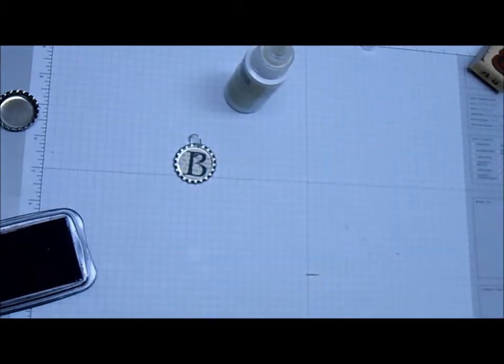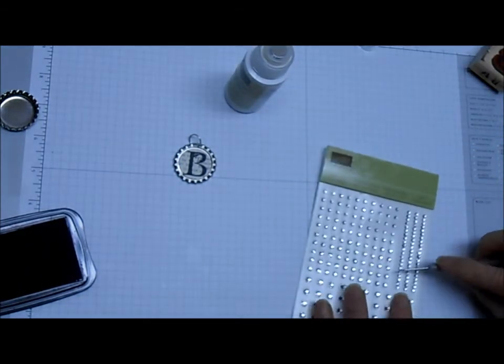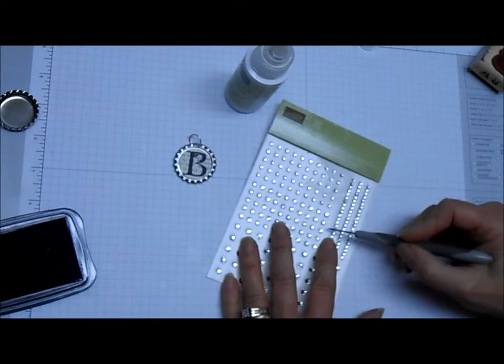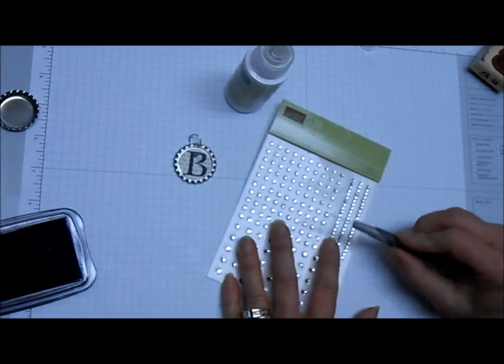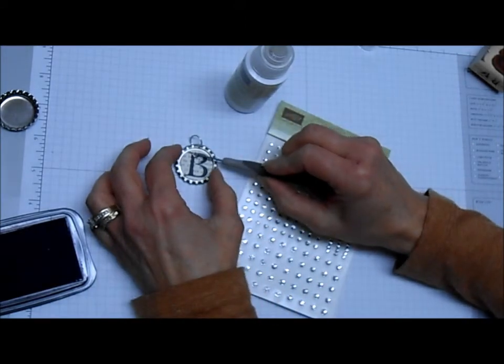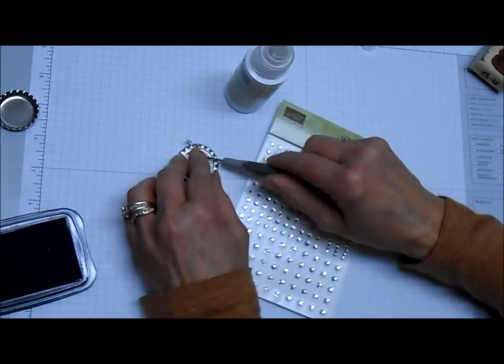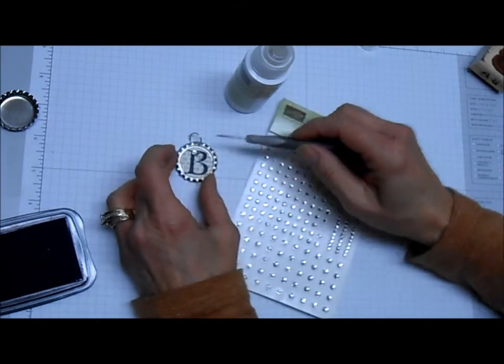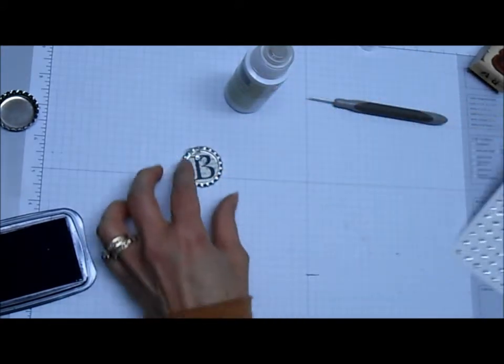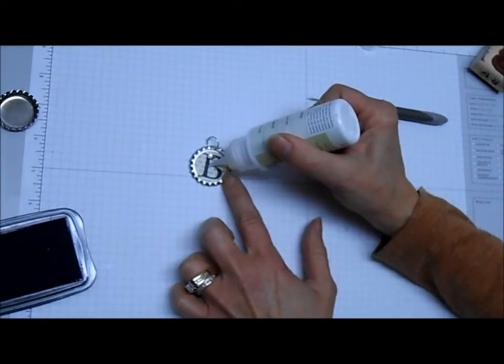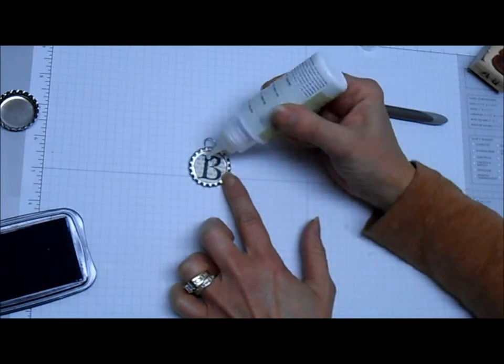Then I'm going to take more Crystal Effects. Actually, before I do that, because I want to add a little bling, I'm going to take my rhinestone, and of course your piercing tool is your best tool for getting those rhinestones off too. And I'm just going to add one up where this little fleur-de-lis accent is on my B. Press that in.